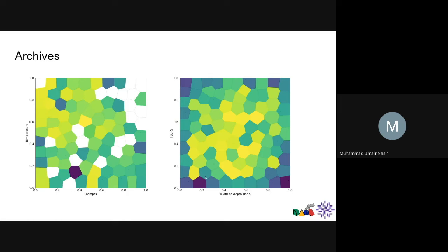The resulting archives show that the network archive fills 100% — we have 100 niches in both archives. After our evolution, we have 100 individuals, and more than 20 perform with high quality. All of them are somewhat diverse from each other. Two behavioral descriptors that we think can be generalized to any case and any dataset are width-to-depth ratio and FLOPs. From our experiments, it seemed like floating point operations per second would be a better way to assess how a network performs than the number of parameters.